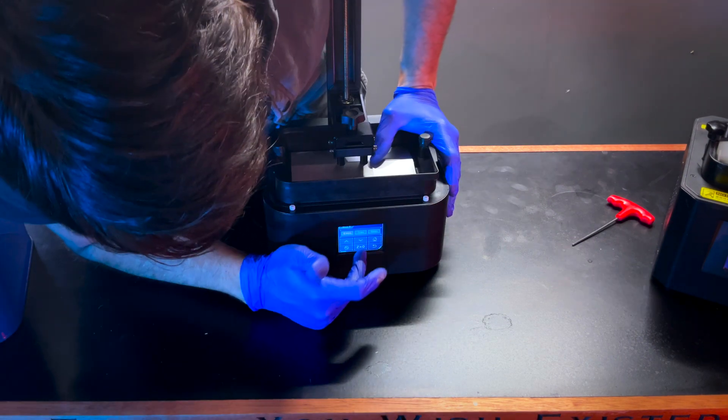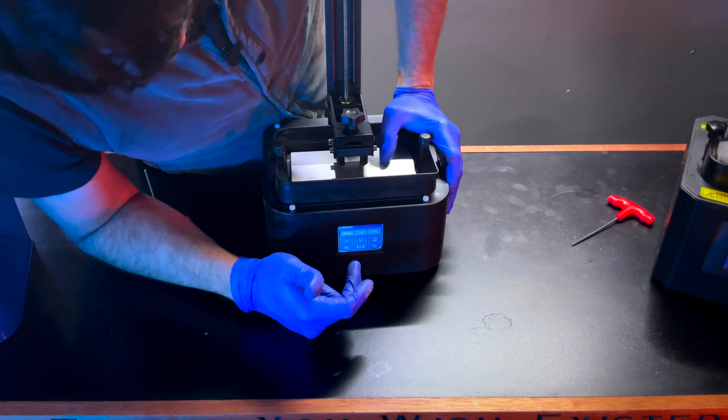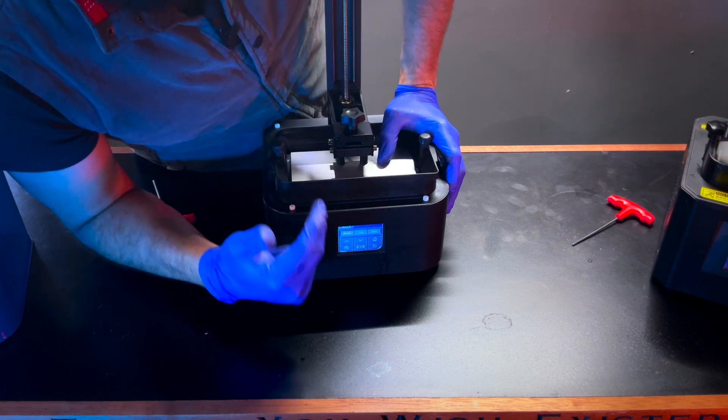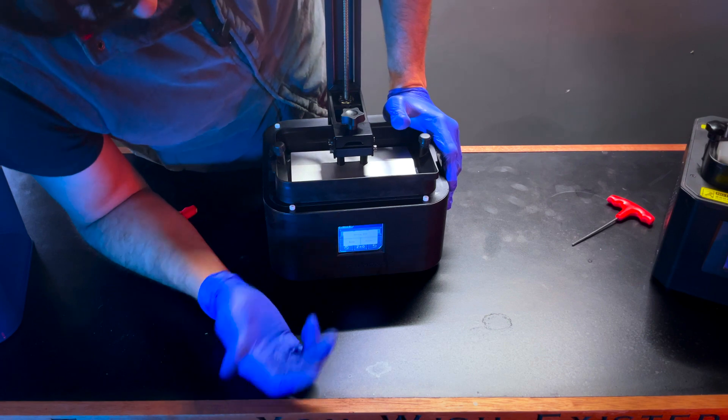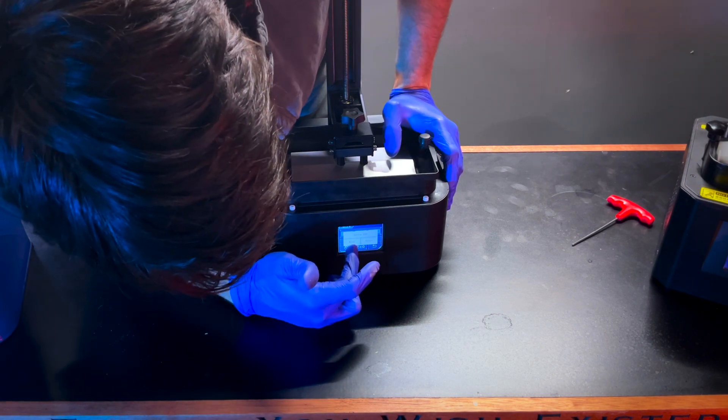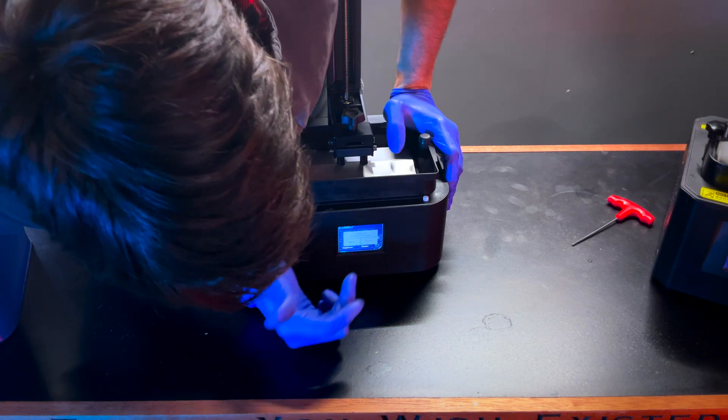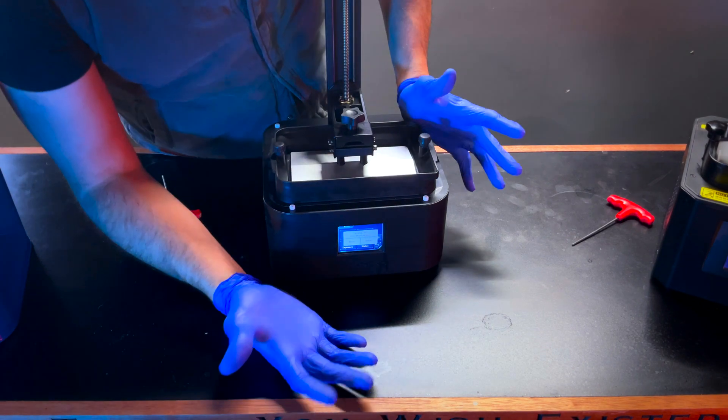At this point, you can also zero your Z axis and that will set a new home position for this printer. And you don't have to do this, but you can do this. And to do that, you click zero and click enter. And that's it, guys.